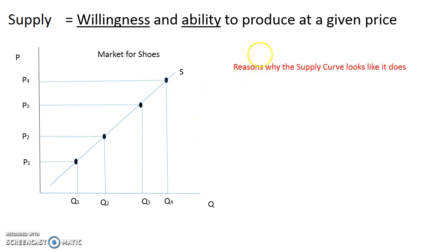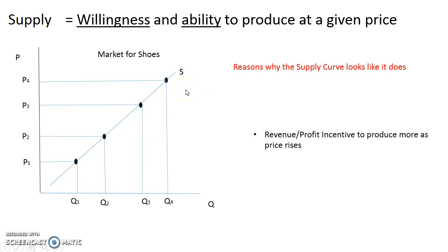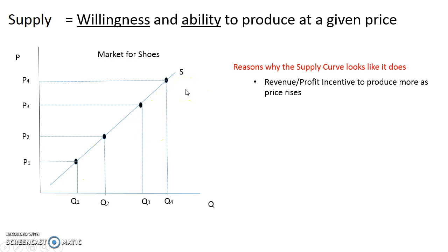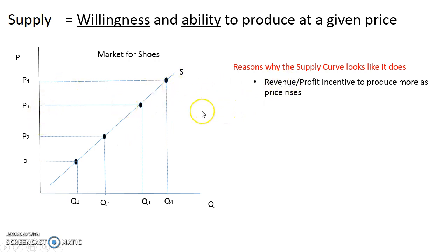The reasons why the supply curve is upward sloping: the first reason is that there is an incentive to produce more because you're going to receive more profit when the price is higher, and that will entice producers to supply more of their product.